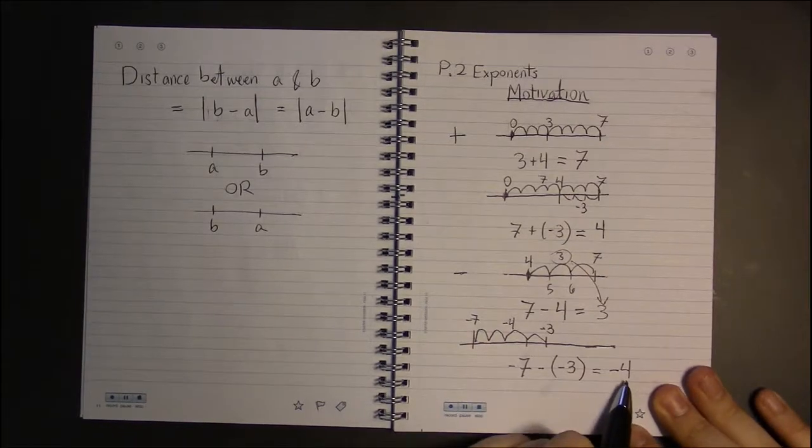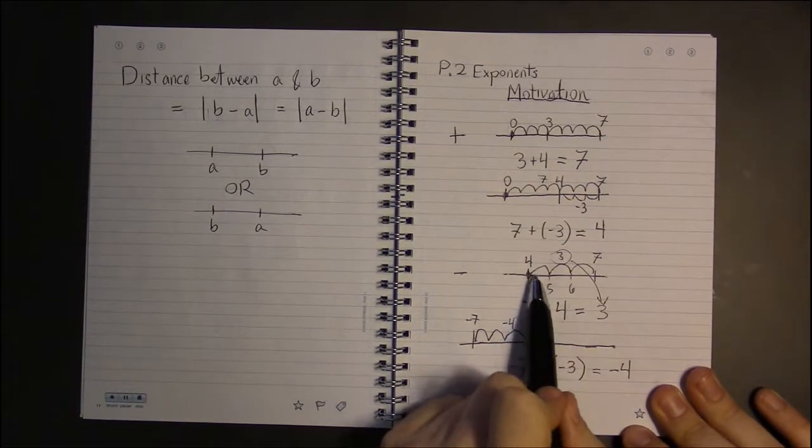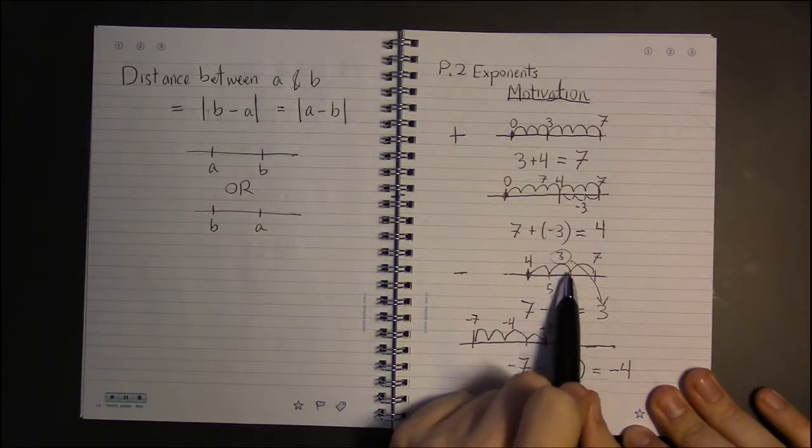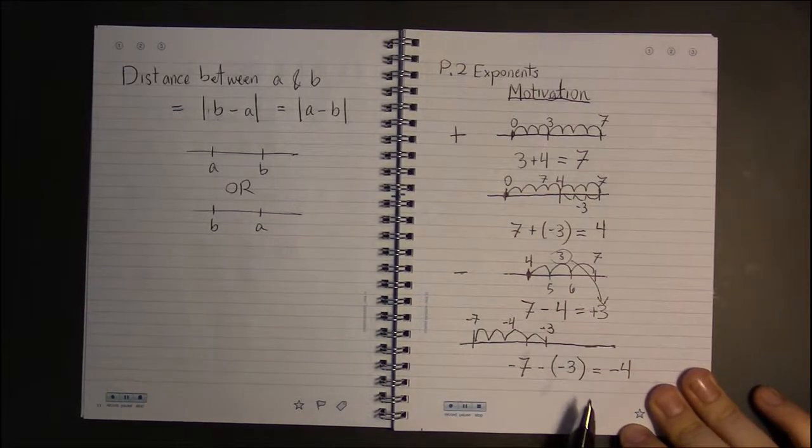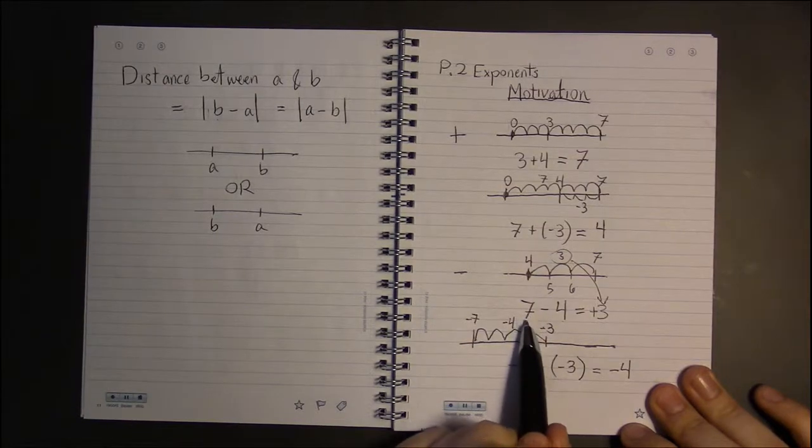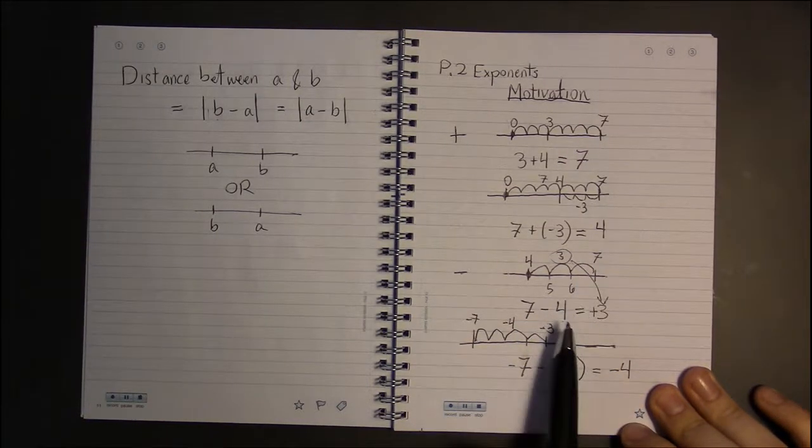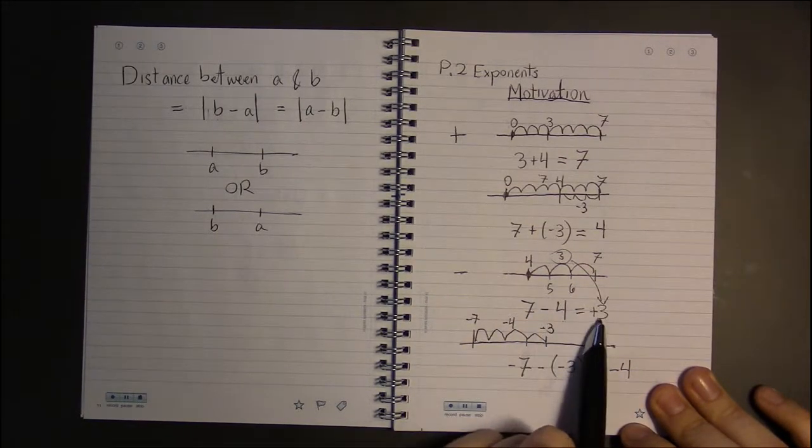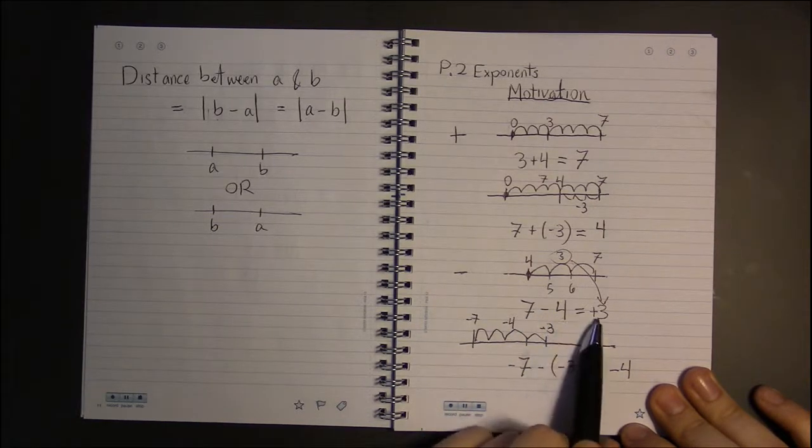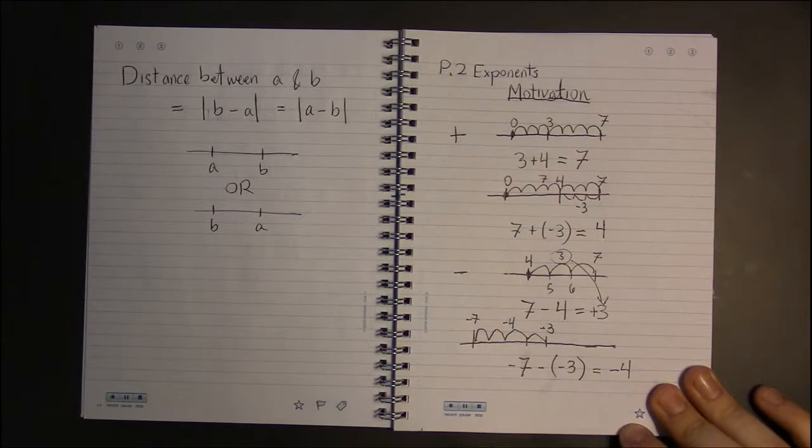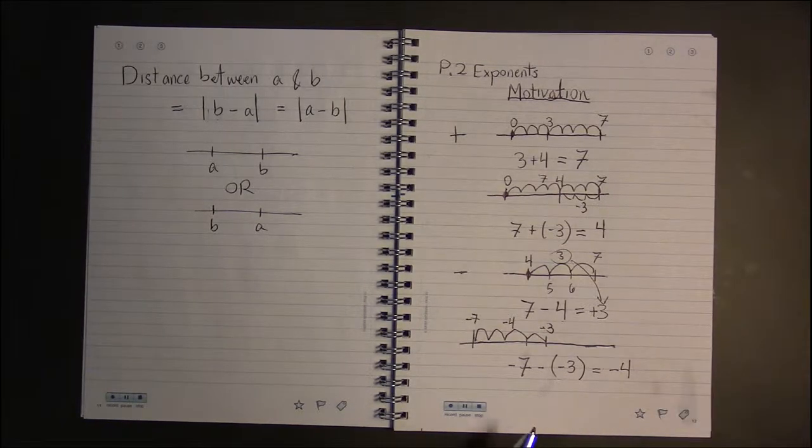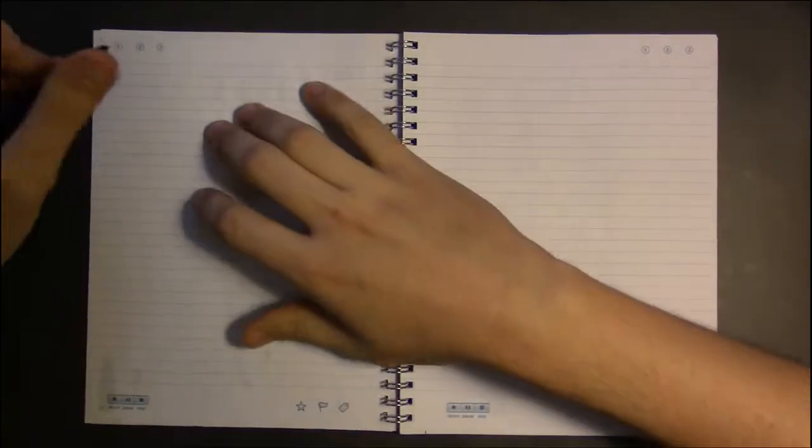So it took us 4 steps to the left to go from minus 3 to minus 7. So, it's 4 steps, but 4 steps to the left. Whereas before, taking steps to the right meant our answer was positive. So if the first number is to the right of the second, we're going to get a positive answer. In other words, if the first number is larger, we get a positive answer. If the first number is smaller, then we're going to end up with a negative answer.